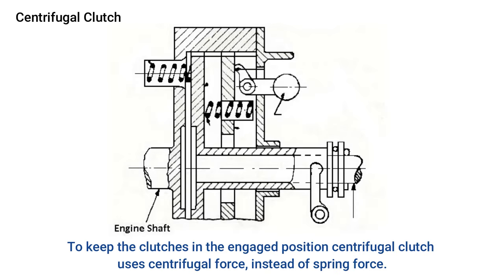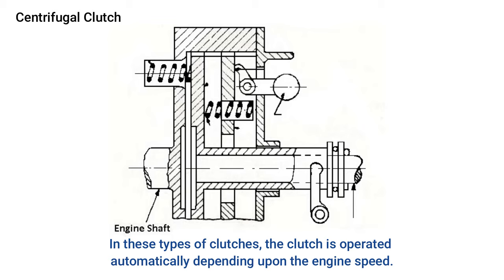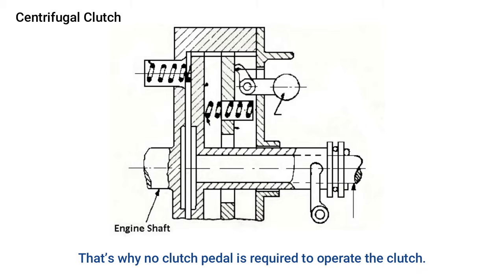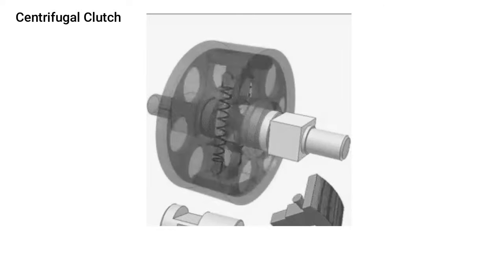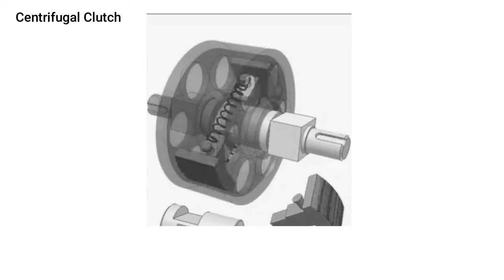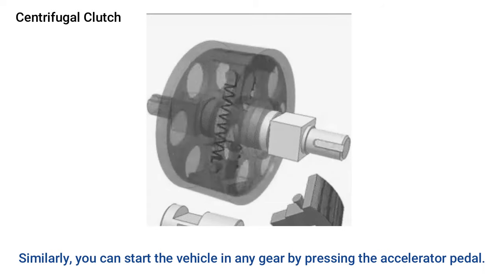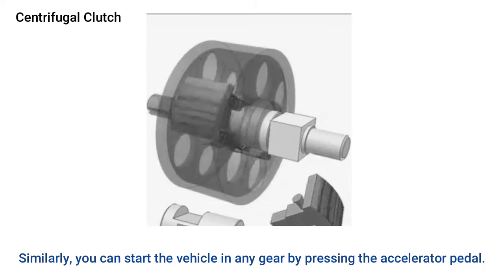The centrifugal clutch uses centrifugal force instead of spring force to keep the clutch in the engaged position. In these types of clutches, the clutch is operated automatically depending upon the engine speed, so no clutch pedal is required. This makes it easy for the driver to stop the vehicle in any gear without stalling the engine, and you can start the vehicle in any gear by pressing the accelerator pedal.